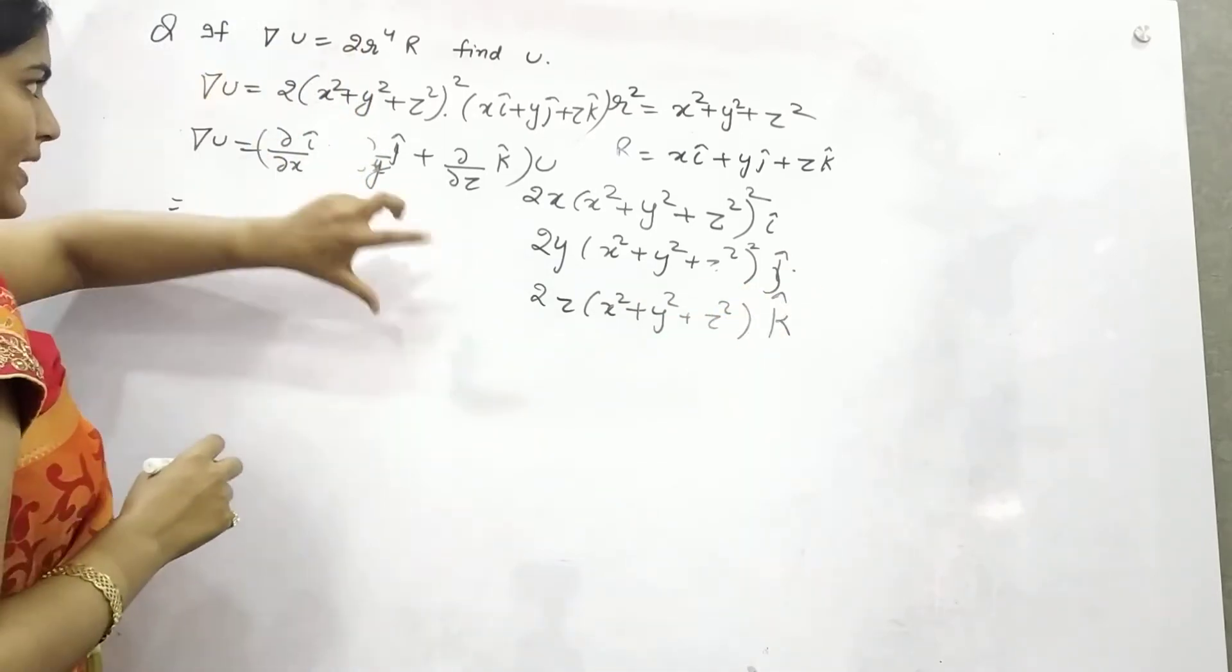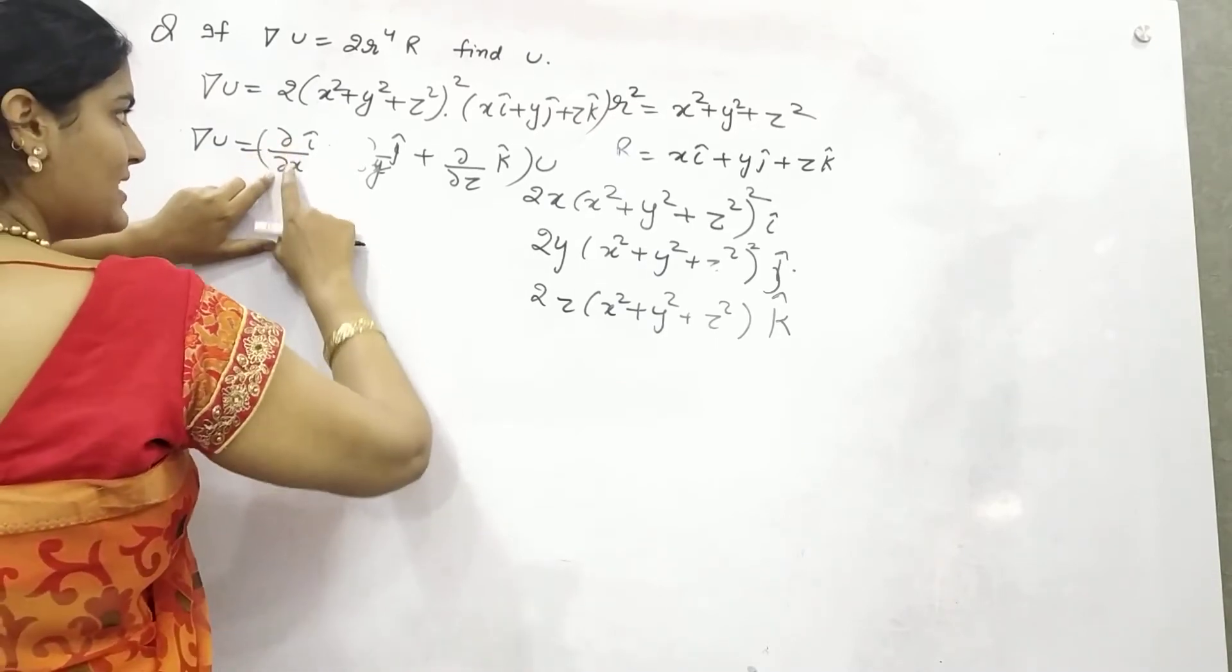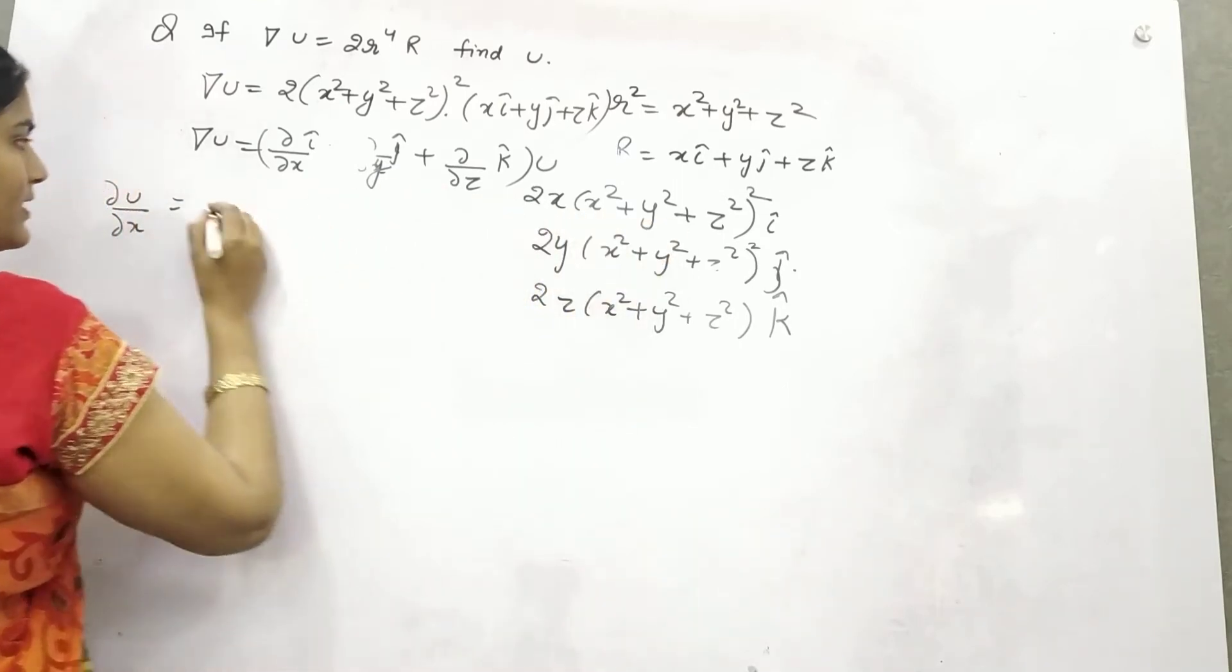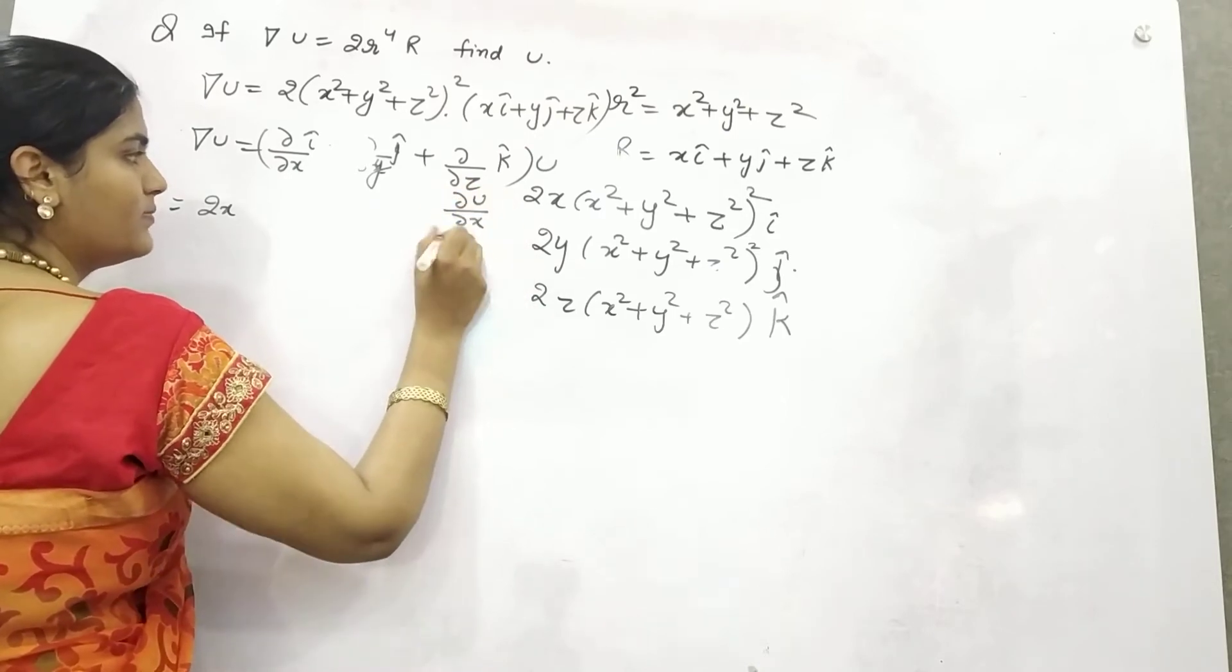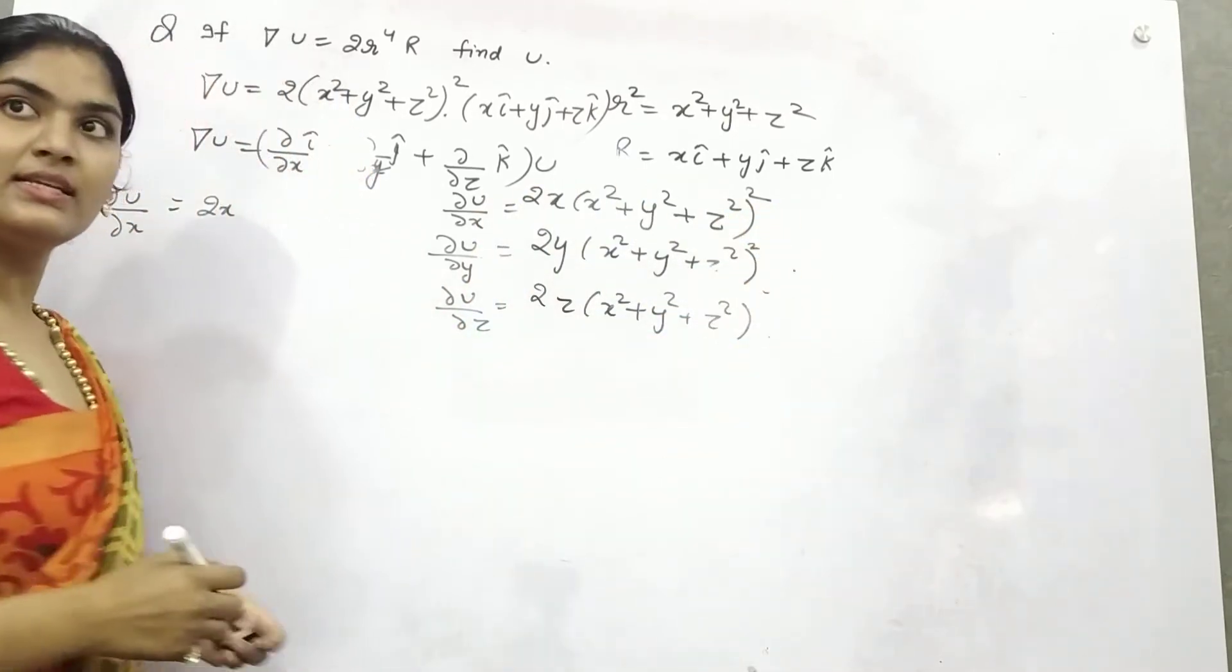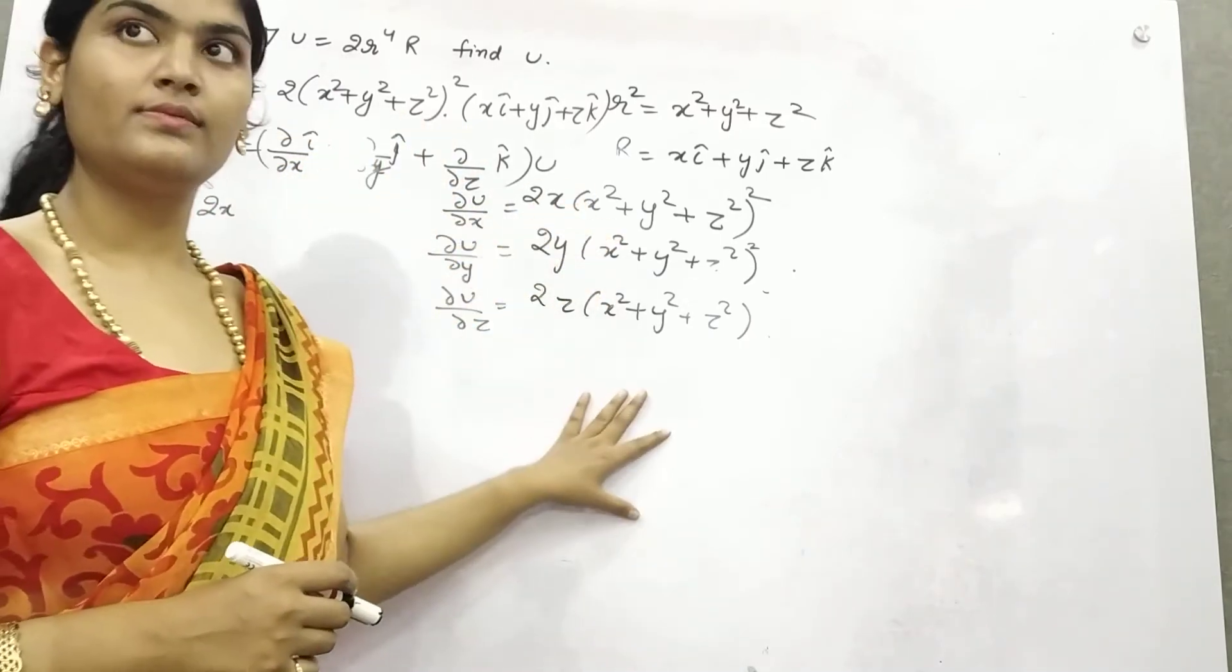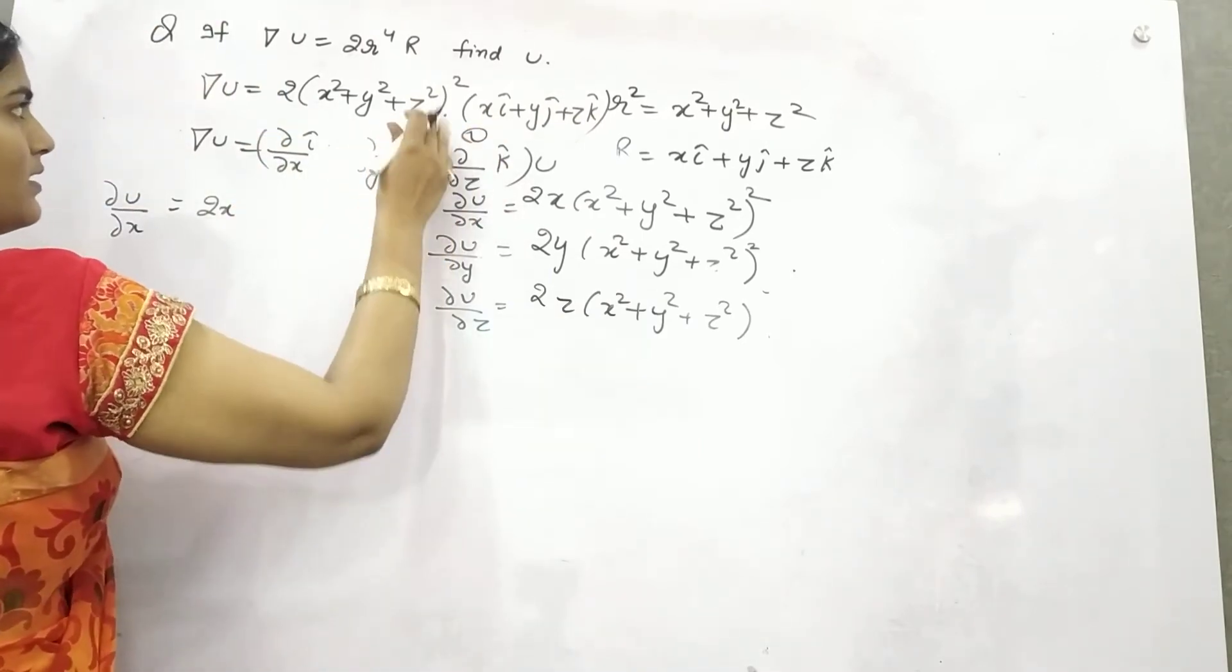So if you equate here, your i part is what? Differentiation of x, right? So your differentiation of u with respect to x will be your x part, 2x(x² + y² + z²)².